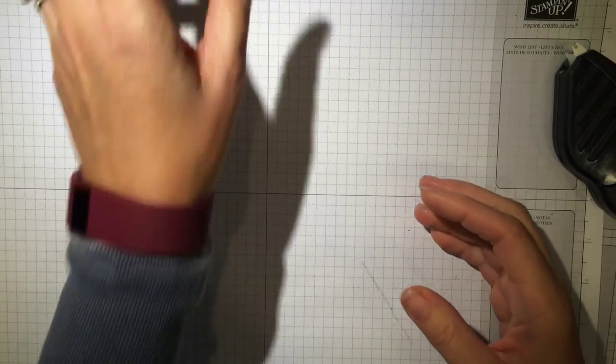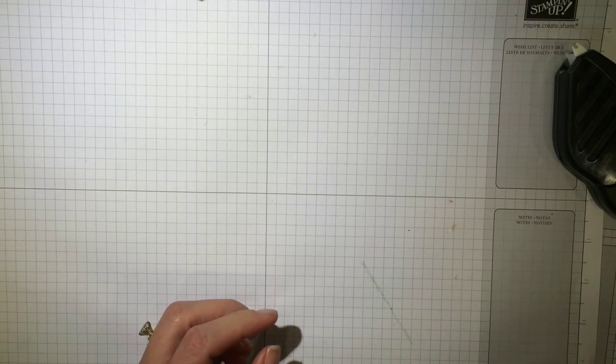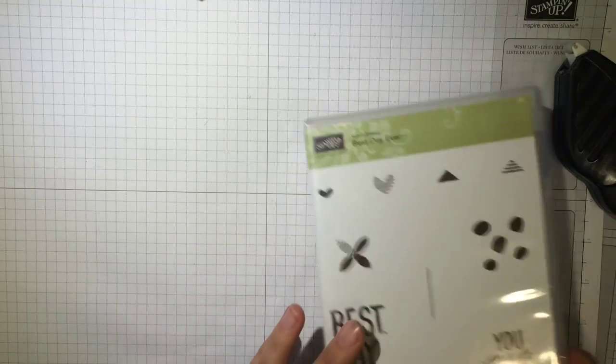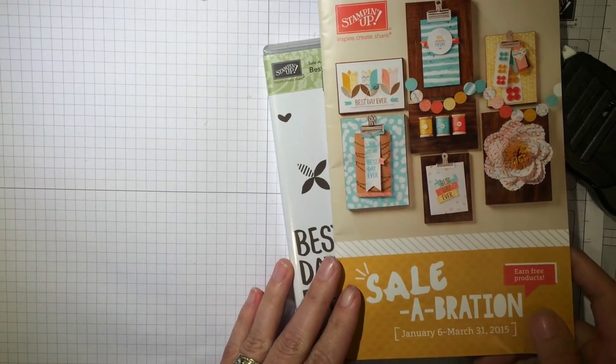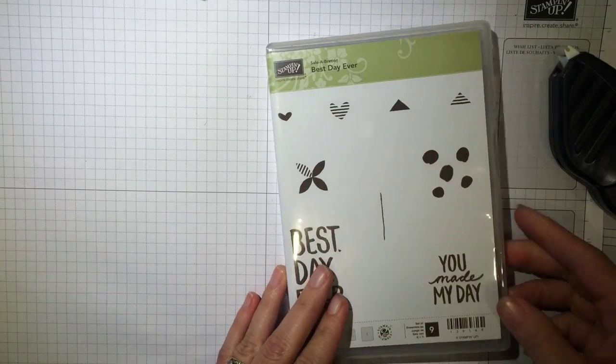Okay. All right. Now for the stamping. We are using this stamp set, which is a free choice in your 2015 celebration catalog. It's called Best Day Ever.